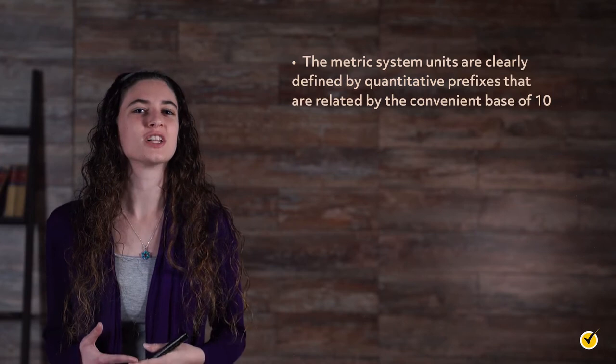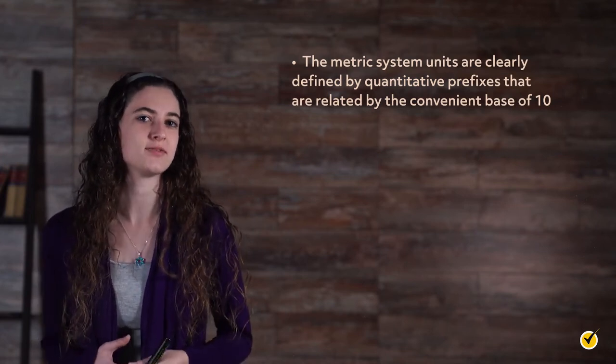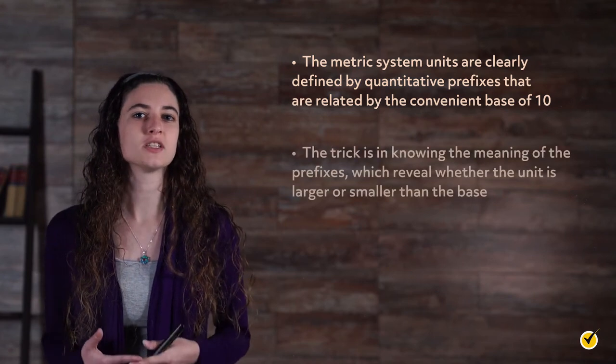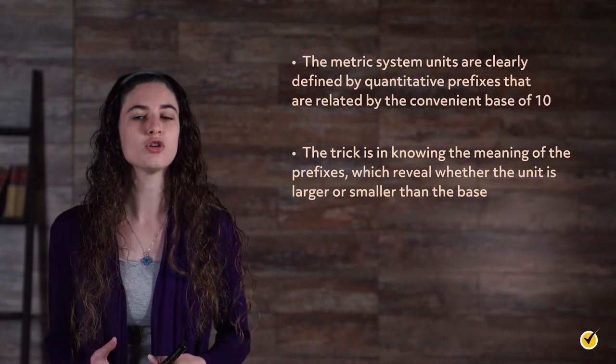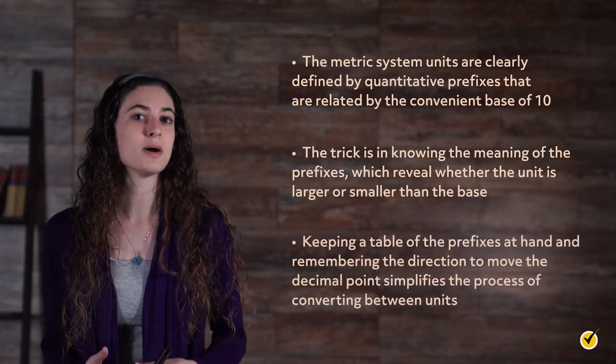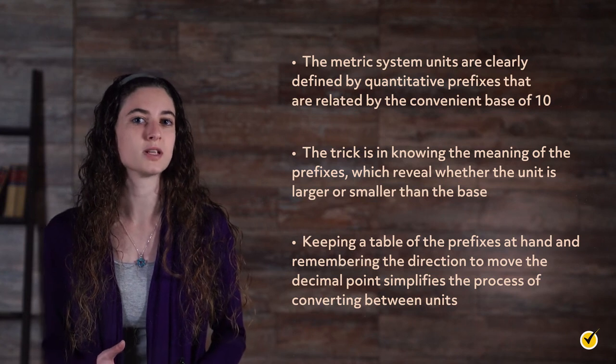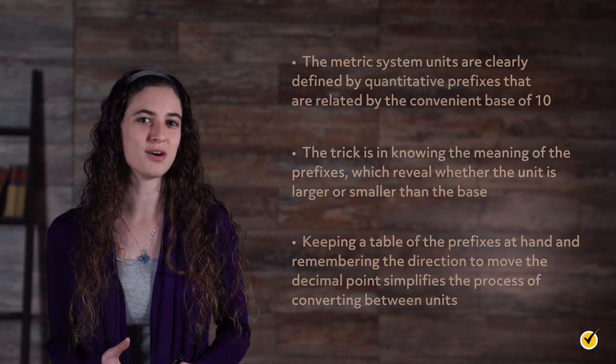So, to review, the metric system units are clearly defined by quantitative prefixes that are related by the convenient base of 10. The trick is in knowing the meaning of the prefixes, which reveal whether the unit is larger or smaller than the base. Keeping a table of the prefixes at hand and remembering the direction to move the decimal point simplifies the process of converting between units. I hope this review was helpful. Thanks for watching and happy studying!